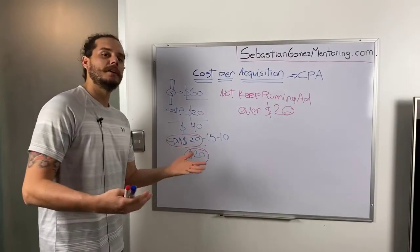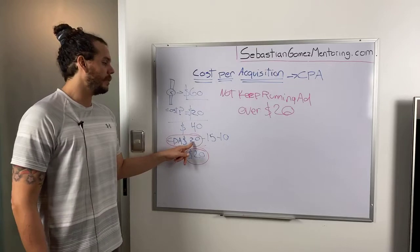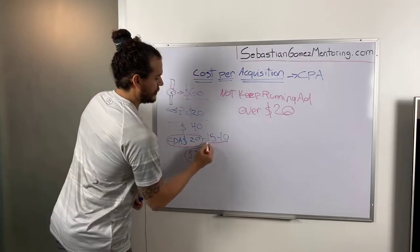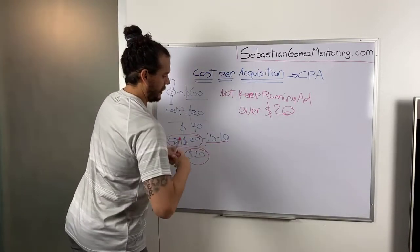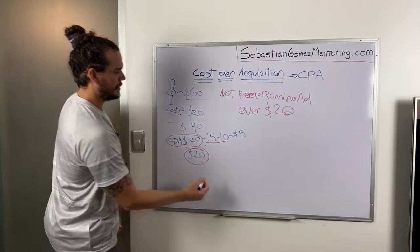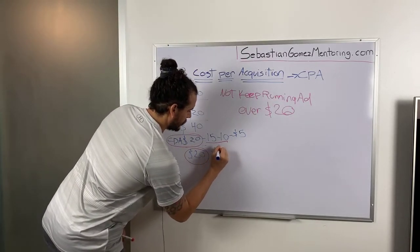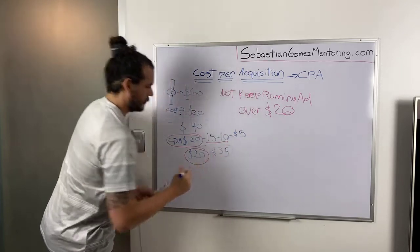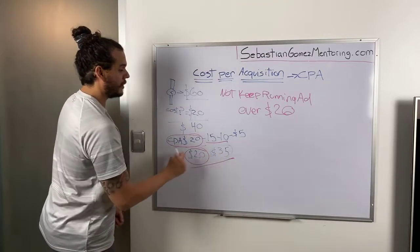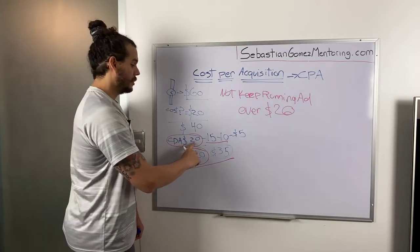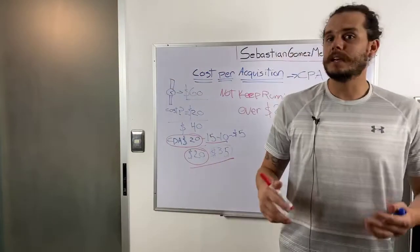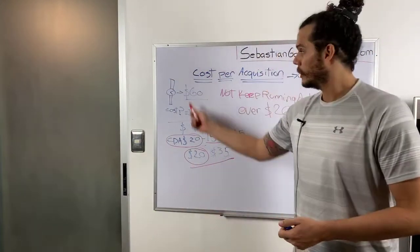If I can get the CPA lower — say at fifteen, ten, or even five dollars — instead of making twenty dollars profit per sale, I'm making thirty-five dollars. My margins keep getting bigger the lower my cost per acquisition goes. So knowing the data is key. If you start running traffic without doing this simple math, you're going to be blind.